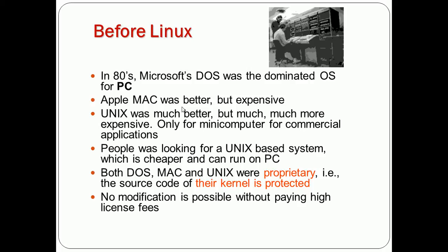People were interested in bringing Unix into PCs. But the problem was that Unix, Mac, and DOS are proprietary. So it wasn't easy to get a Unix version for PCs — it was not possible, because the source code was protected.